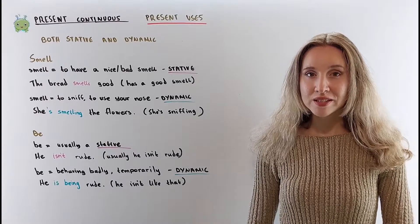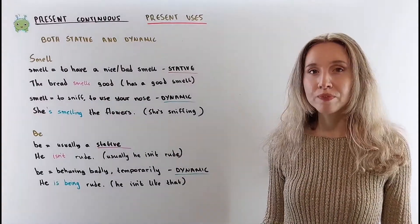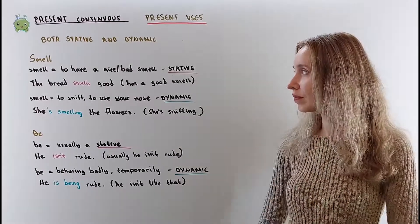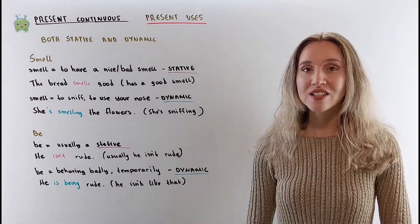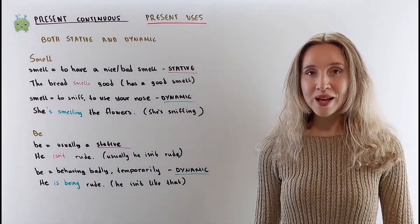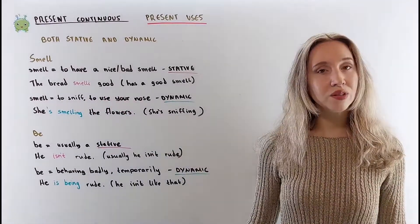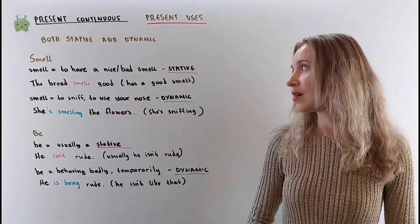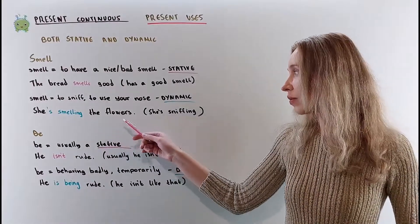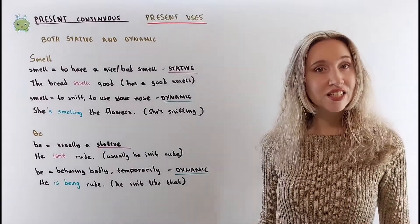The verb 'smell' in the present simple means to have a nice or bad smell — it smells good, it has a good smell — this is a stative verb. When 'smell' means to sniff, to use your nose to breathe in an odor, it is a dynamic verb. For example: she is smelling the flowers — she is sniffing, she is using her nose.